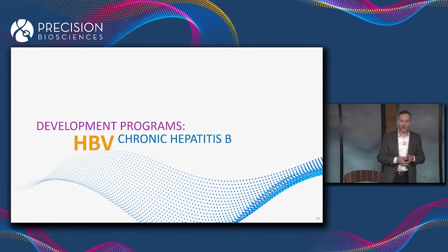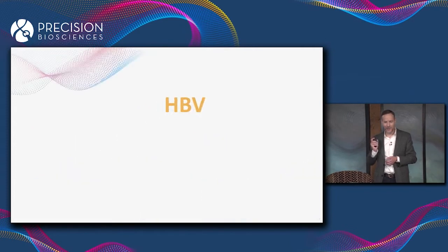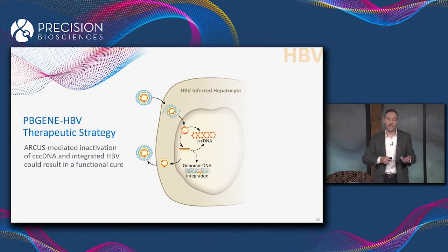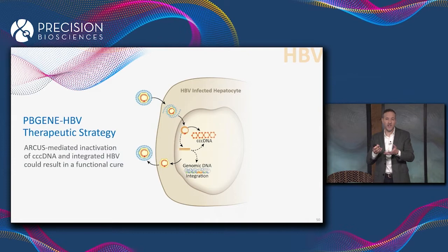Turning now to chronic hepatitis B. The real challenge with hepatitis B that has made it very difficult to cure is that the HBV virus persists in chronically infected hepatocytes as an extra-chromosomal genome called CCC DNA, and unless we are able to eliminate CCC DNA, there's always the potential that the virus can reactivate.